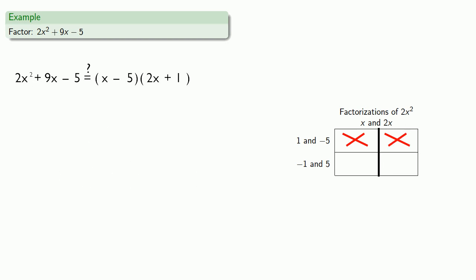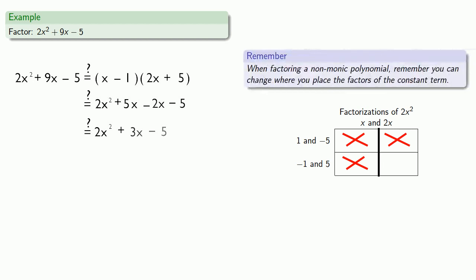How about using the factorization of the constant minus 1 and 5? So we check out x minus 1 times 2x plus 5. Then we try x plus 5 times 2x minus 1, and we have our factorization.